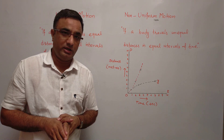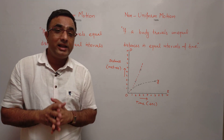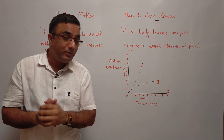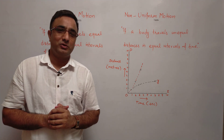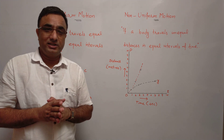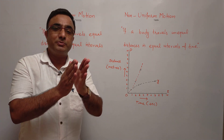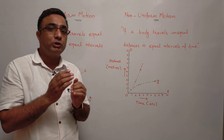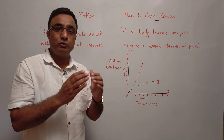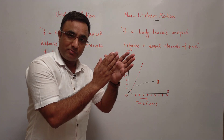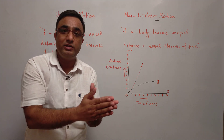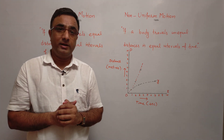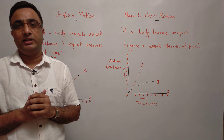कोई भी ऐसी motion जो equal intervals of time में unequal distance travel करे, उसे non-uniform motion कहते हैं। अब बताइए — जब आप स्कूटी या बाइक लेकर घर से school जाते हैं, तो वो uniform motion का example है या non-uniform motion का? जैसे ही आप घर से चलते हैं और speed बढ़ाते हैं, फिर वहाँ जाकर रोकते हैं — पहले second में 2-3 meters travel हुई हो, next second में उससे ज्यादा, और जब रोका तो distance कम हुई। Speed कभी कम की, कभी ज्यादा — तो वो non-uniform motion का example है।